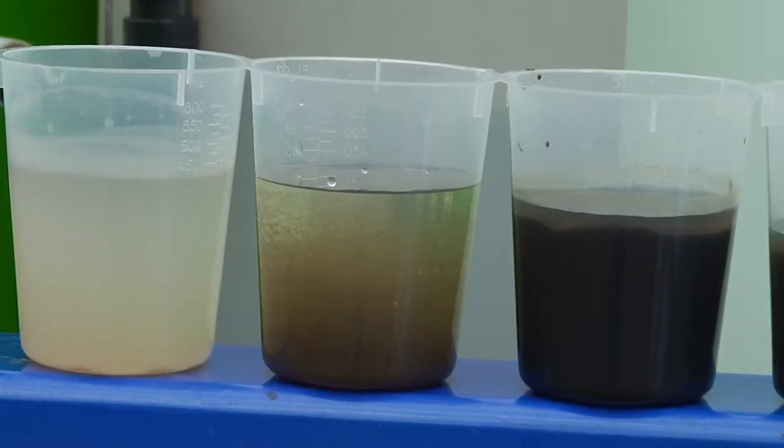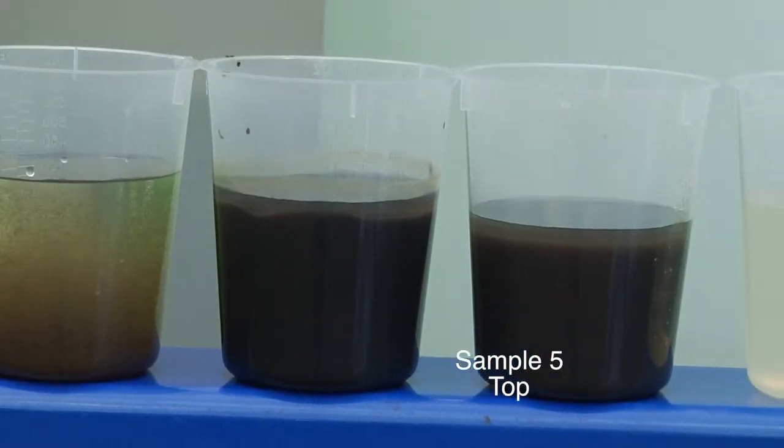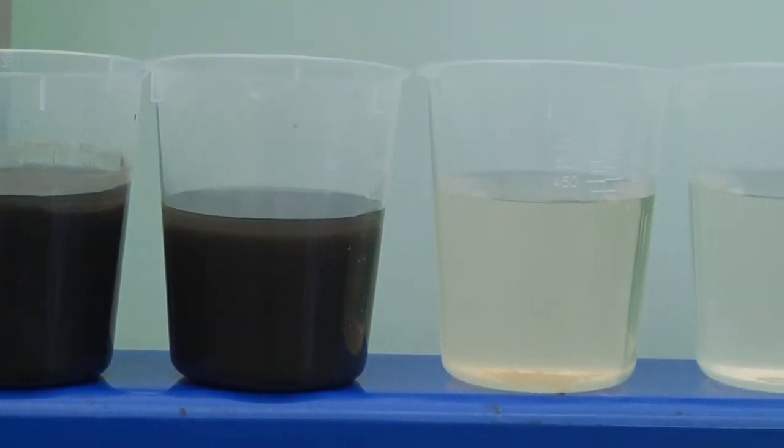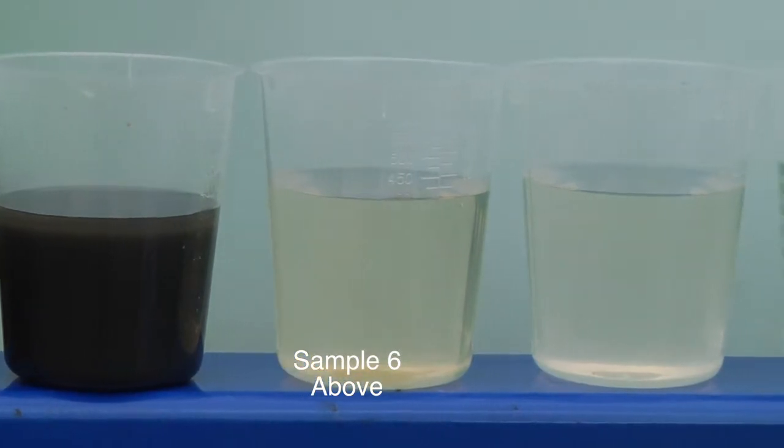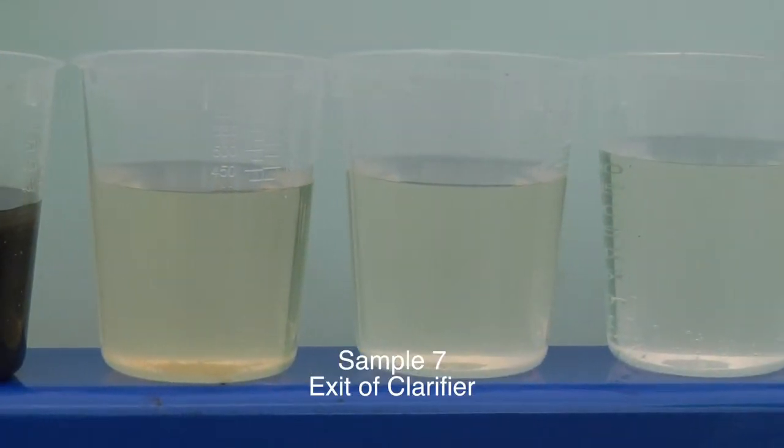Number four is the bottom of the sludge bed. Number five is the top of the sludge bed. Number six is immediately above the sludge bed. Number seven is the exit of the clarifier.